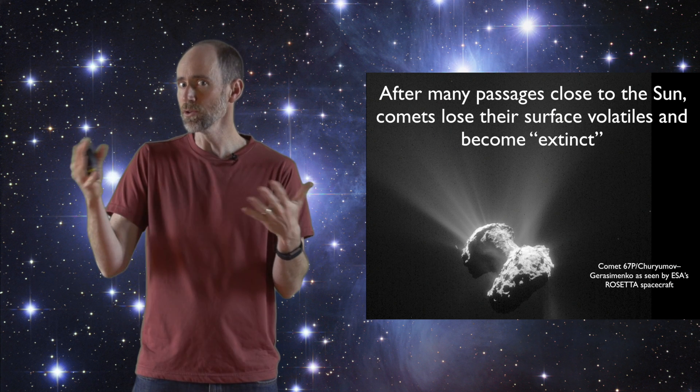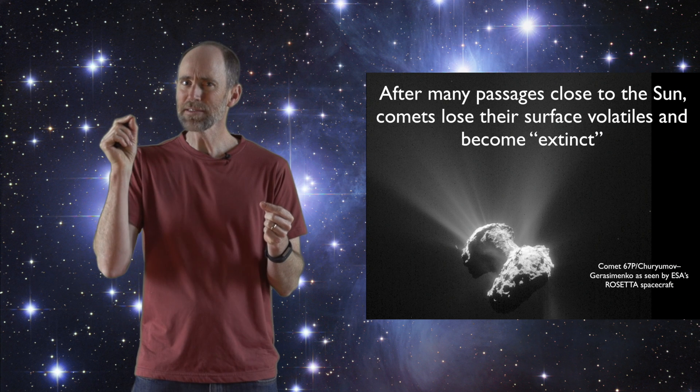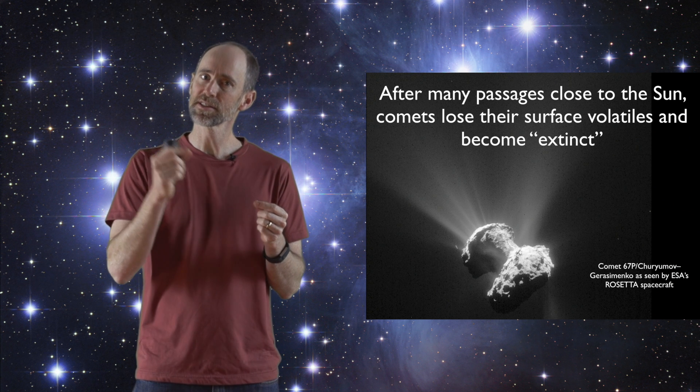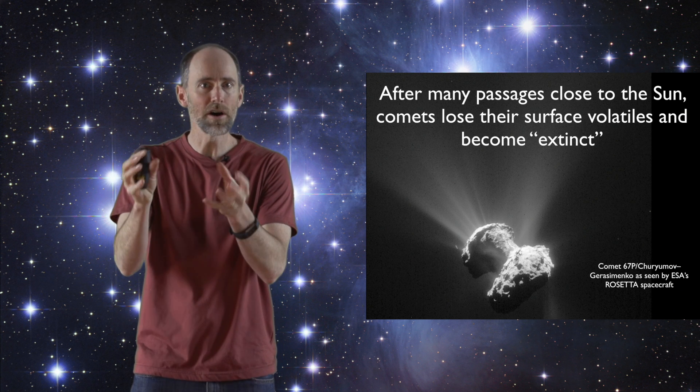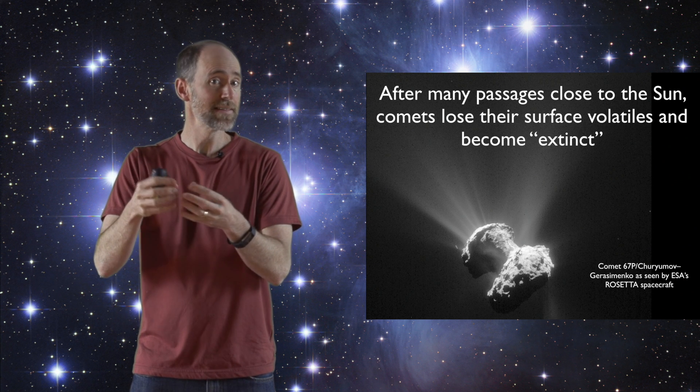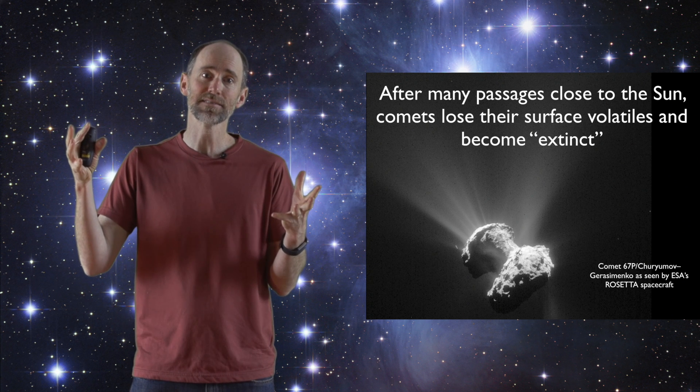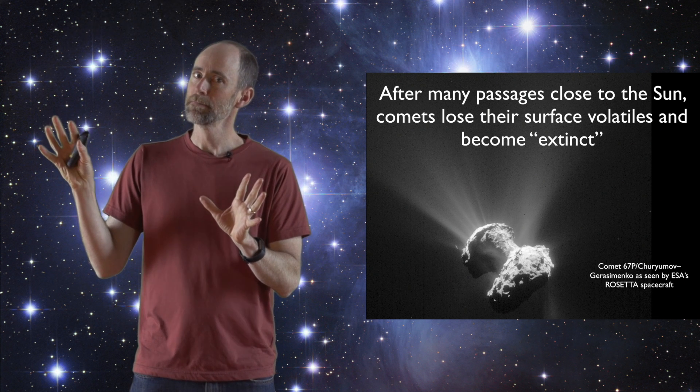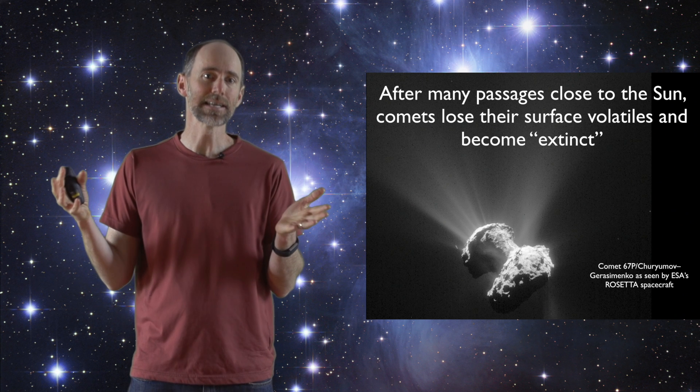Models of how comets in the solar system evolve show that they only have a certain number of passages close to the sun before they lose all of the ices on their surface, and they stop outgassing, they stop being active. They don't just disappear, but they're no longer active, they're extinct.